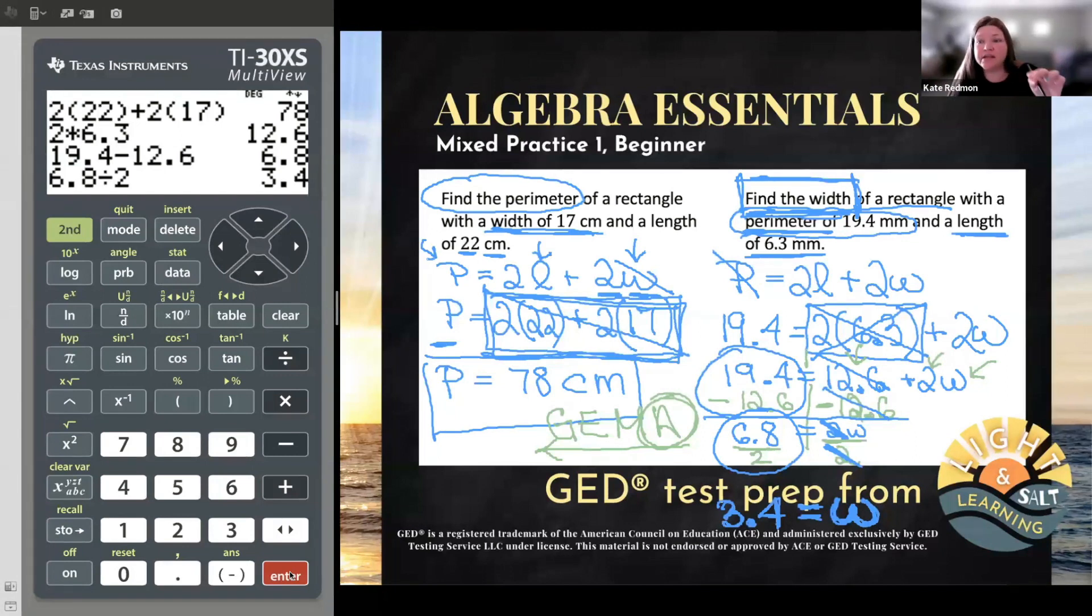So what is the width? The width is 3.4. So, but this is, of course, geometry. So it's 3.4 something. Let's see. The width of a rectangle with a perimeter of 19.4 millimeters and a length of 6.3 millimeters. This is 3.4 millimeters.